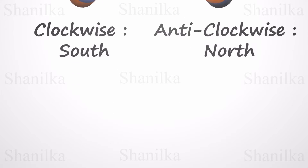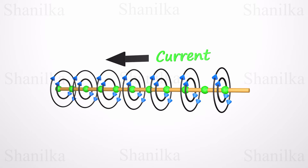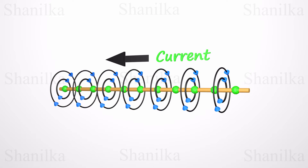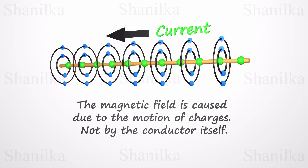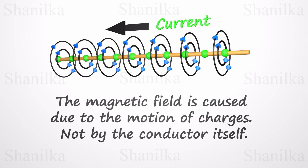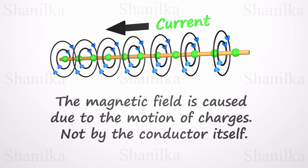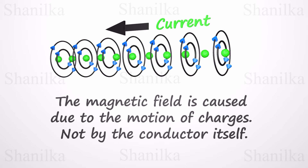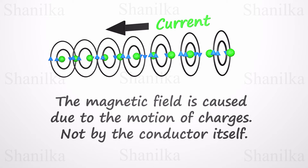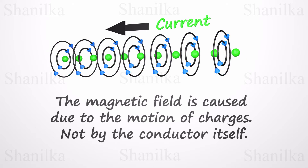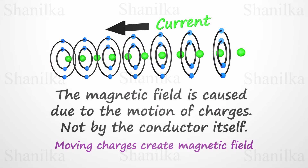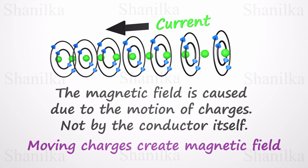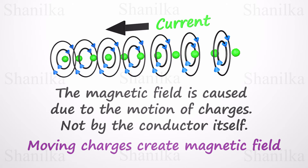In electromagnetism, the magnetic field is caused by the motion of charges, not by the conductor itself. If we move the same number of charged particles without a conductor, we can still observe the magnetic field. The moving charges create the magnetic field.